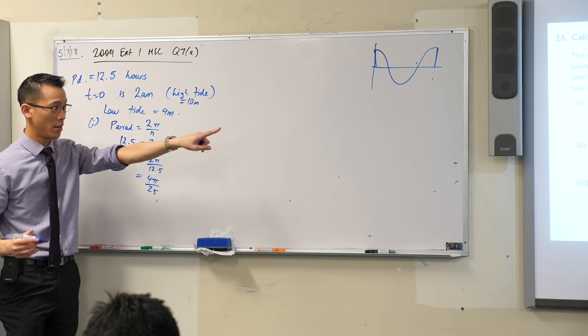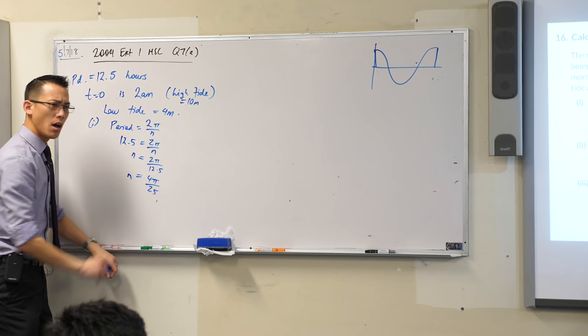One more step and I have that 4π on 25 that I'm trying to get to. Okay, so I've got my n which is going to go at the front. Thumbs up.